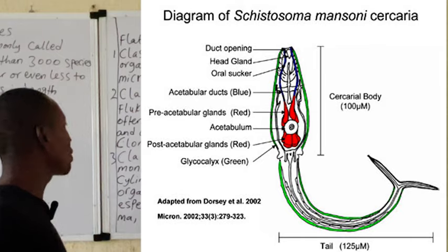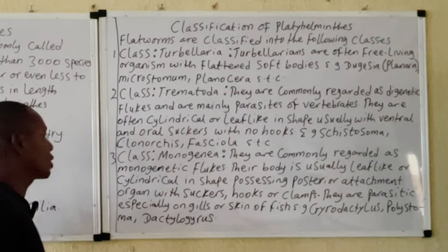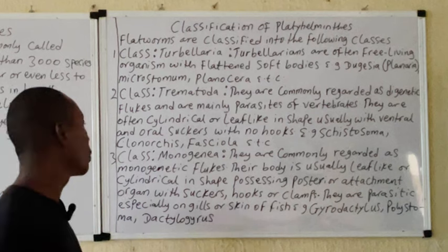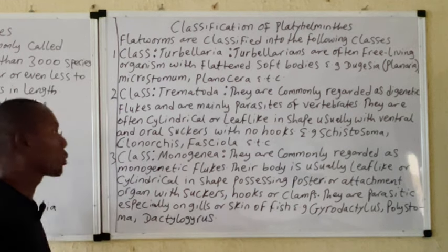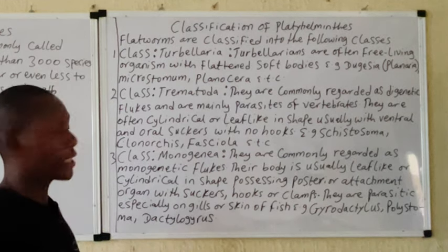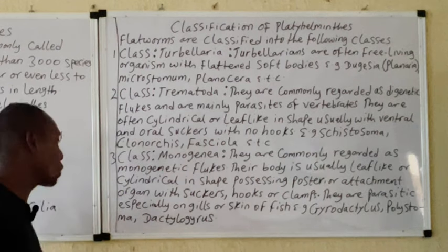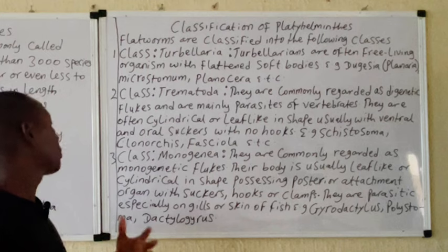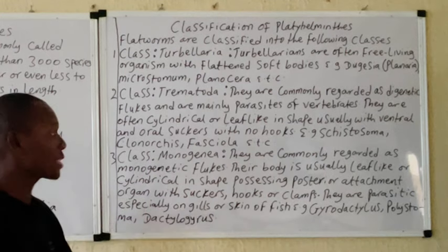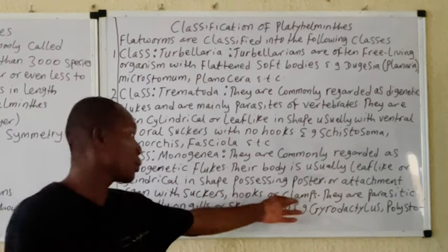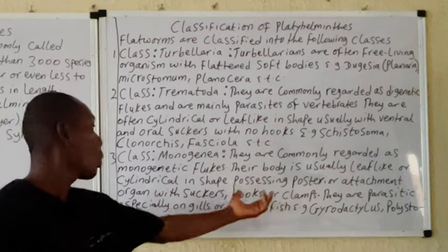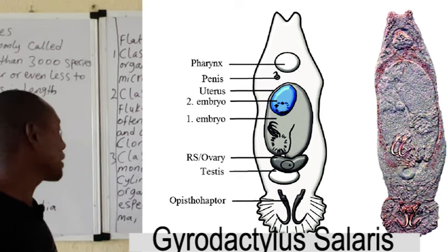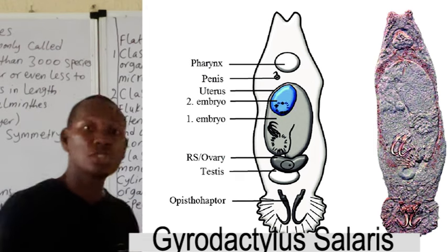We also have the next class, which is the Monogenea, generally regarded as the monogenetic flukes. Their body is usually leaf-like, just like the Trematoda, or cylindrical in shape, also possessing a posterior attachment which consists of suckers. They can possess hooks or clamps; in some cases they can possess one or more of these features. They are generally parasites, especially on the gills or skin of fishes.